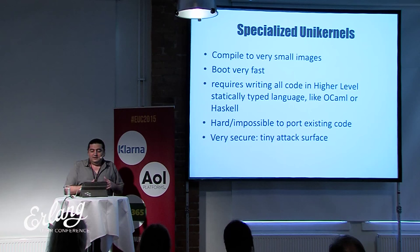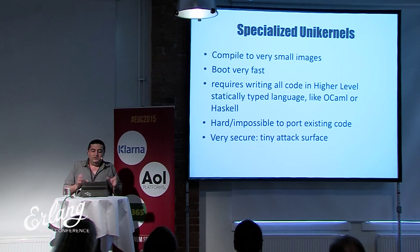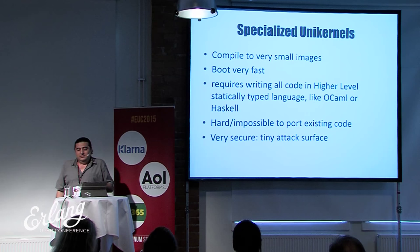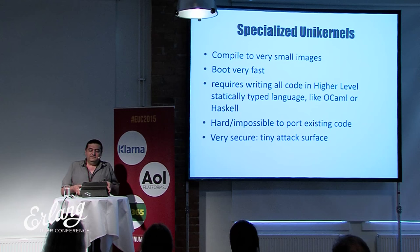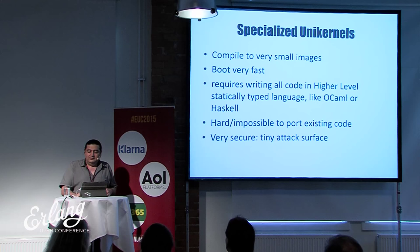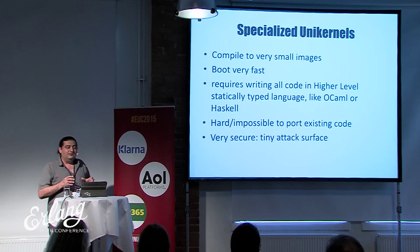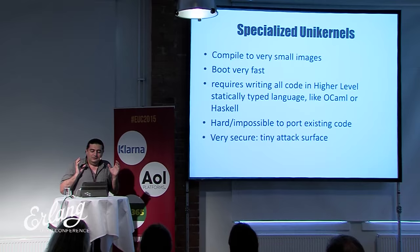There are two types of unikernels. Specialized unikernels like MirageOS or LingVM compile to very small images that boot in milliseconds, but require writing all code in high-level statically typed languages like OCaml or Haskell. Porting existing code can be hard or impossible. Their advantage is a very tiny attack surface — you link only the libraries you actually use, and the OCaml or Haskell compiler does static analysis and dead code elimination. It's like 'what you see is what you get' for an operating system.